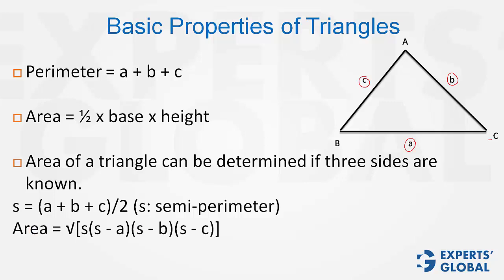Area of the triangle equals the square root of s times (s minus a)(s minus b)(s minus c), where s is the semi-perimeter.